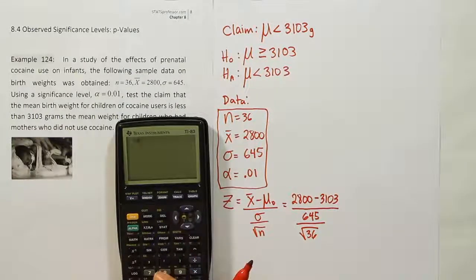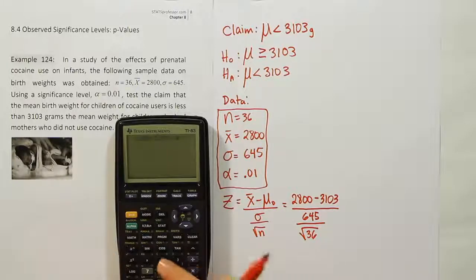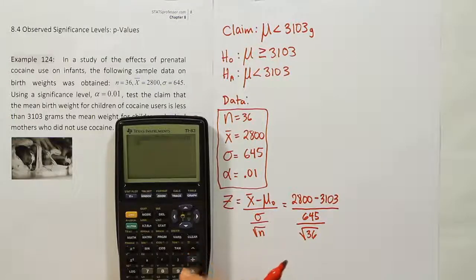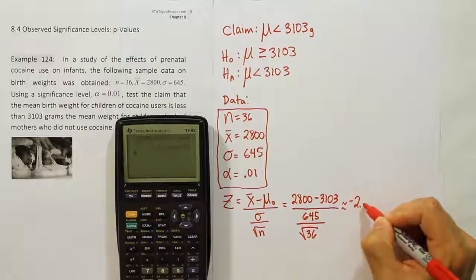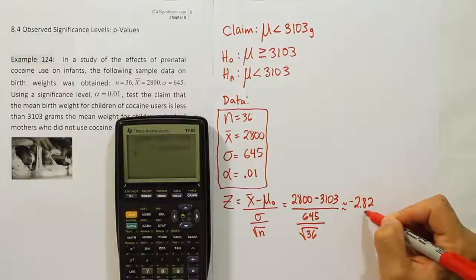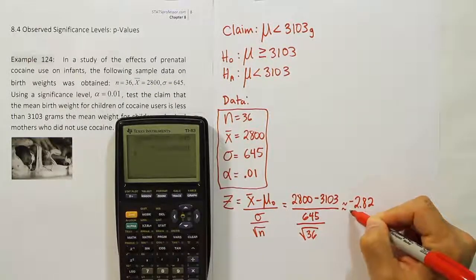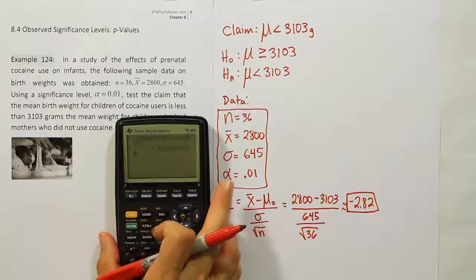Let's work that number out here for the test stat and see what we find. If I plug everything in, it's going to be 2,800 minus 3,103, close that up, I'm going to divide then by 645 divided by the square root of 36. Since we know that's 6, let's just type in 6. Close it up and hit enter. We end up with negative 2.82 basically. In this problem, we're going to use the p-value method to test the hypothesis. So it's important that you round this off to two decimal places because that is the way our z-table works.